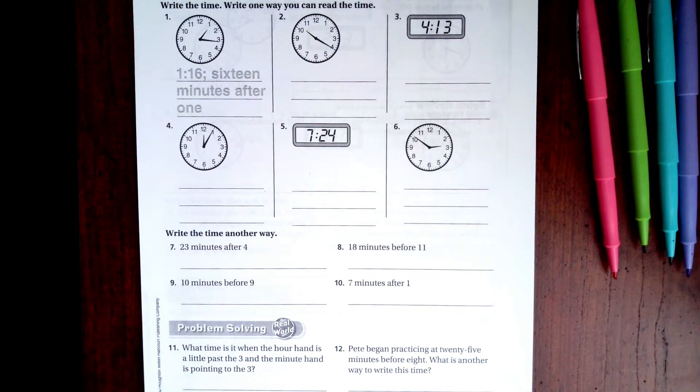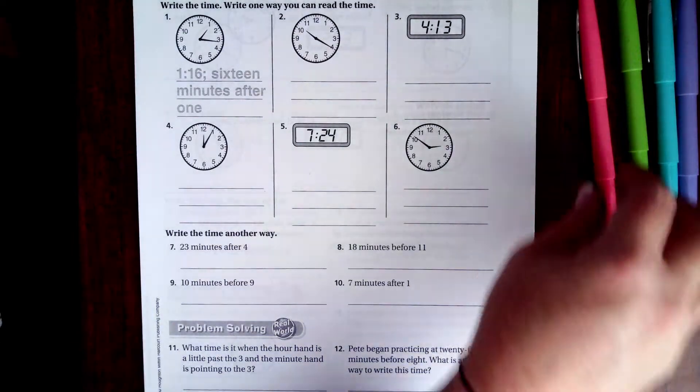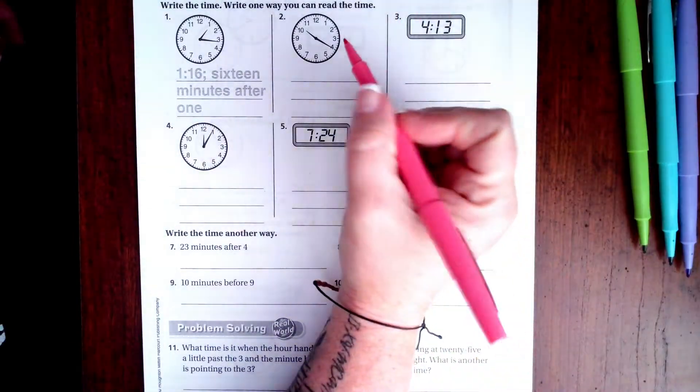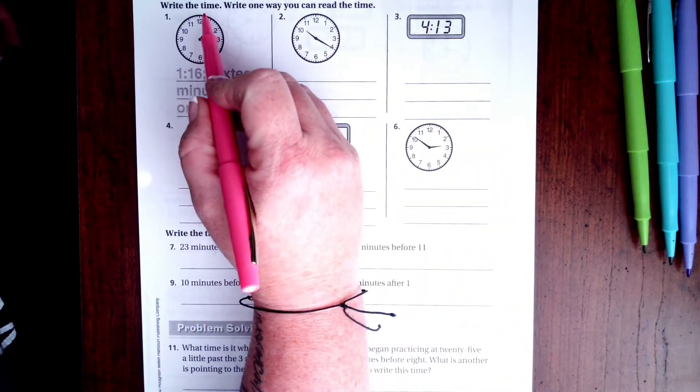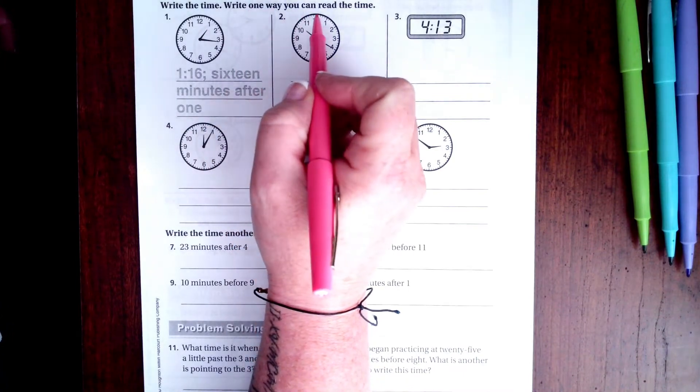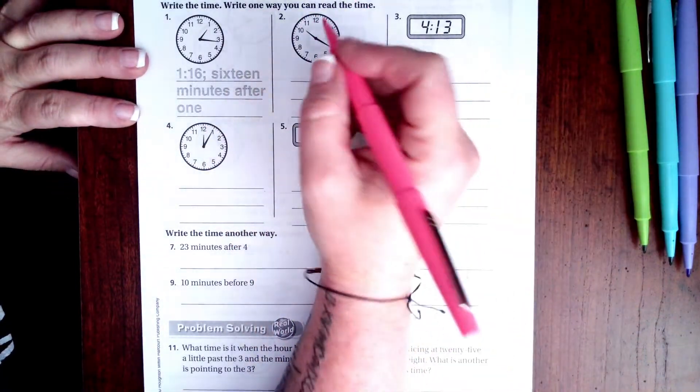Hi guys, welcome to third grade Chapter 10 Lesson 1. Let's go ahead and get started with number two. We would read this as it says write one way you can read the time.